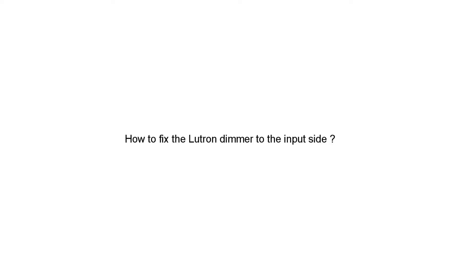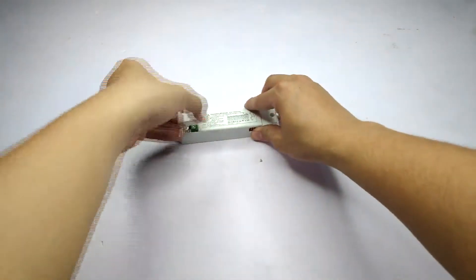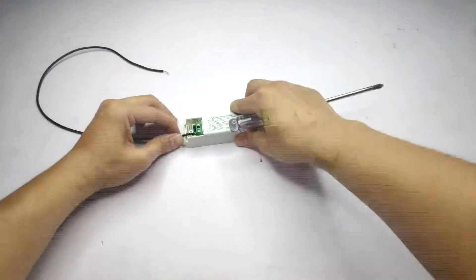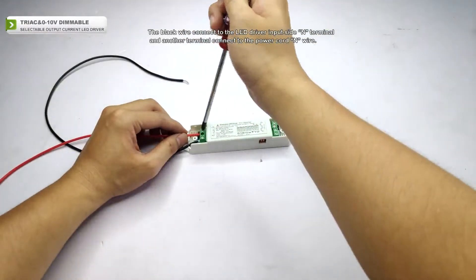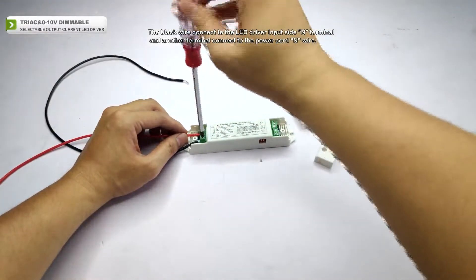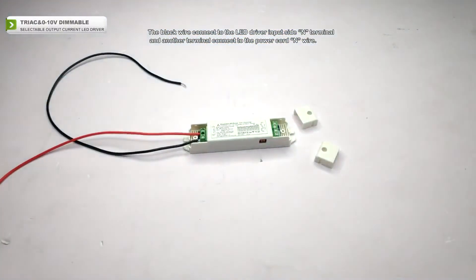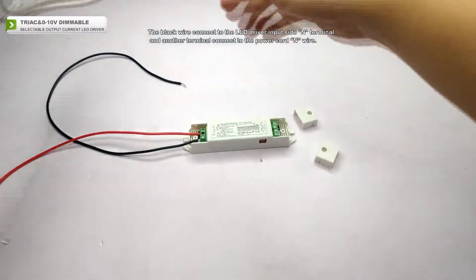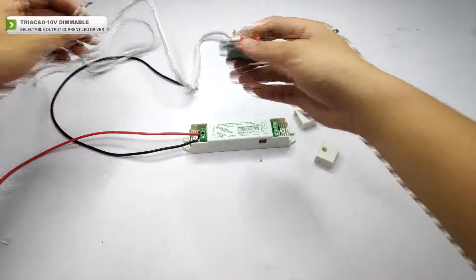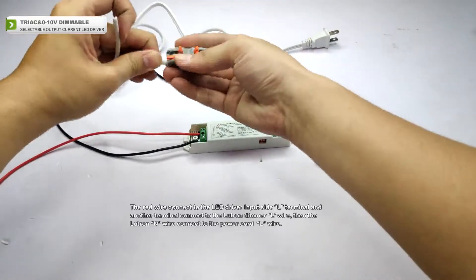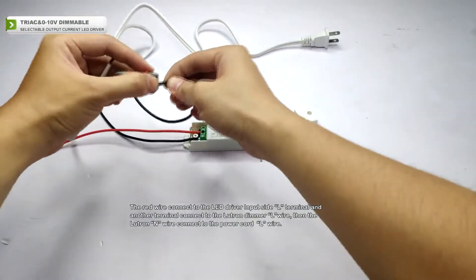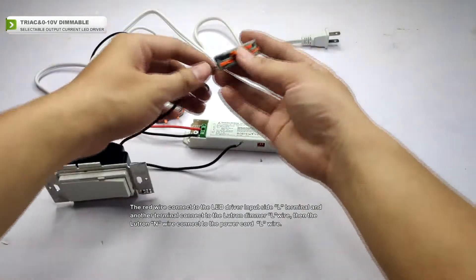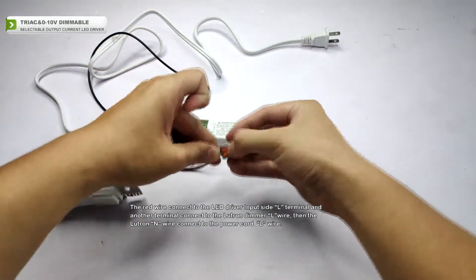To fix the Lutron dimmer to the input side: the black wire is connected to the LED driver input side N terminal, and another terminal connected to the power cord. The correct wire is connected to the LED driver input side L terminal, and another terminal connected to the Lutron dimmer L wire.